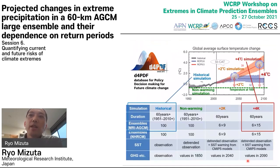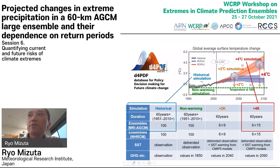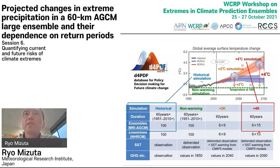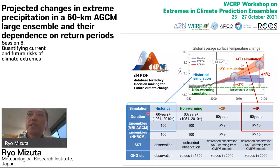We have four types of simulations. The historical simulation uses observed SST and observed greenhouse gas concentrations for 60 years and has 100 ensembles. The warming simulation assumes four degrees warmer than the pre-industrial level using SST warming taken from the CMIP5 models. Today I will show the changes from the historical simulation to the four-degree warming simulation in the global model.